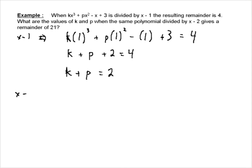Well, it's just going to come from when we divide by x minus 2. So now we have to take this and everywhere there's an x, we're going to replace it with positive 2. So we're going to have k times 2 cubed plus p times 2 squared minus 2 plus 3, and this time, the remainder is 21.